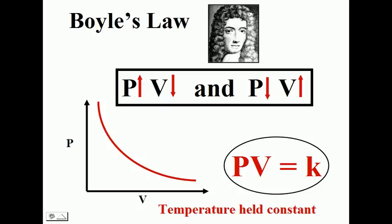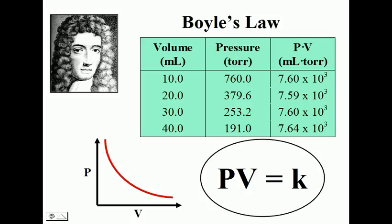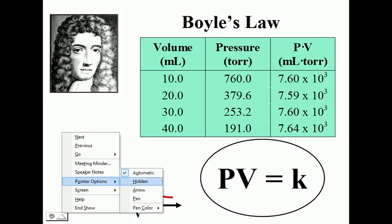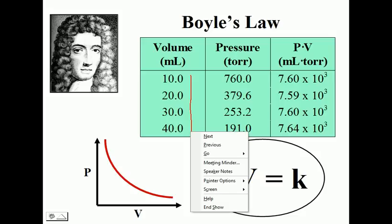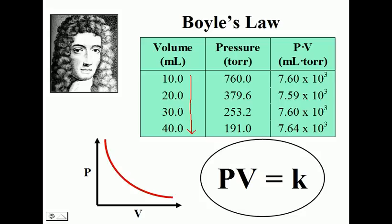This is known as an inverse relationship. Pressure times volume will give you a constant value. In numerous experiments done by Boyle, as he increased the volume of his gas, he noticed that the pressure of the gas decreased. Looking at our set of experimental data, as our volume increased, our pressure decreased, and the product of pressure times volume was always a constant within experimental error.